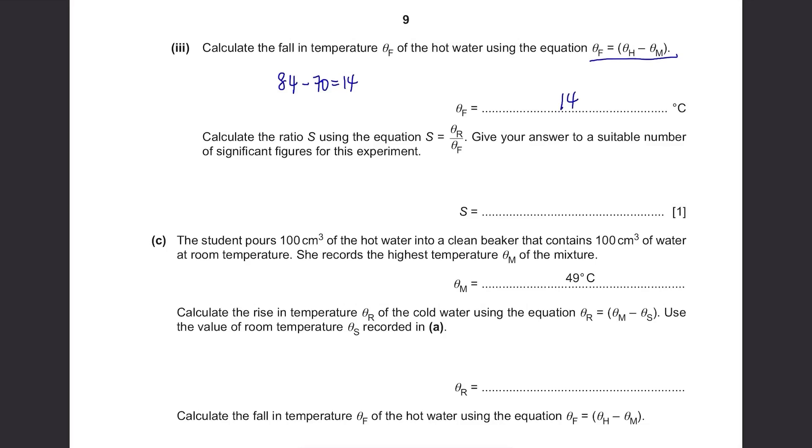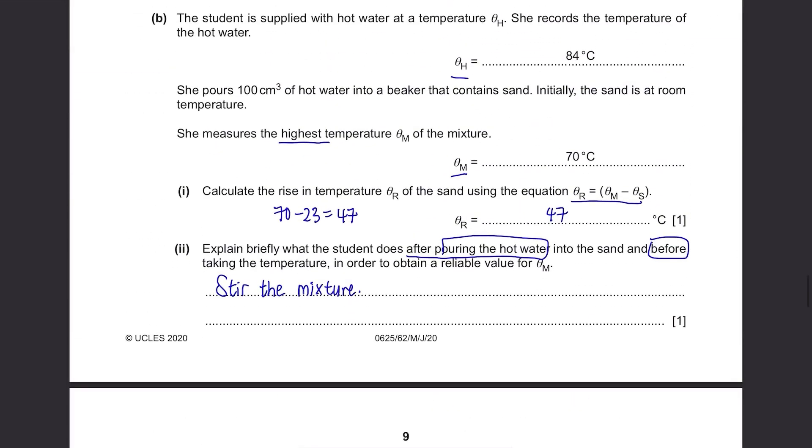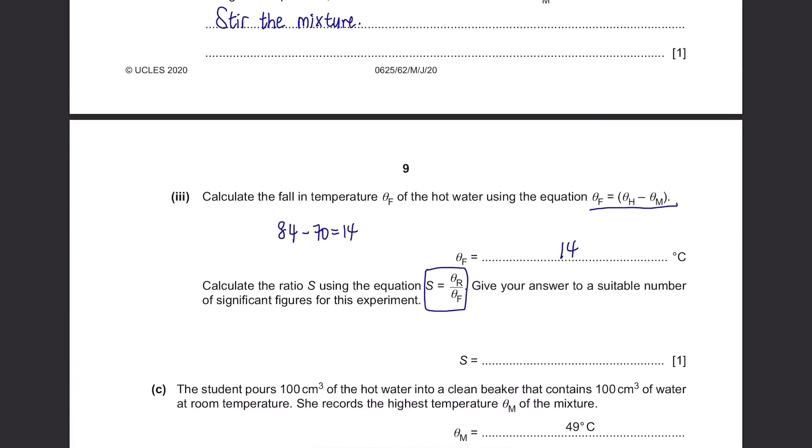Calculate the ratio s using the equation s equals theta-r over theta-f. Give your answer to a suitable number of significant figures for this experiment. Theta-r was 47 and theta-f was 14 and the temperatures were in two significant figures, so let's put our answer as 2 significant figures as well. It's 3.4.